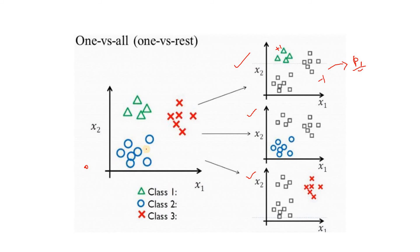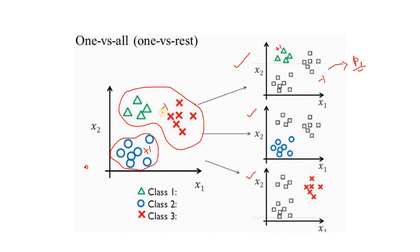For Class 2's model, all training data points belonging to Class 2 are considered as positive data points, and all data points from all other classes are considered as negative. Again, this is binary classification. We predict the probability that the new data point belongs to this positive class — call it p2.